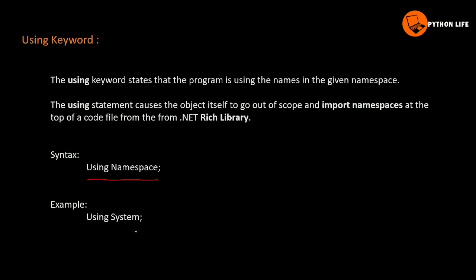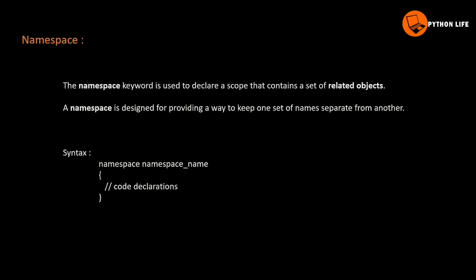Namespaces import the .NET rich library. .NET is a library. Using statement — the object is out of scope. For example, using system, we can use the input and output of the console — write line, read line — and other functionalities in this system namespace. So we can use the namespace keyword.